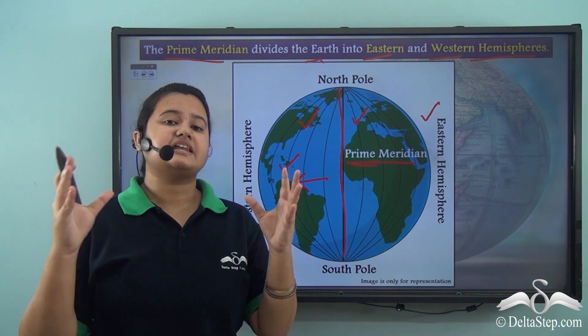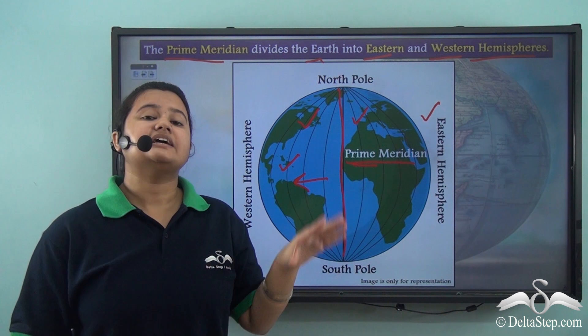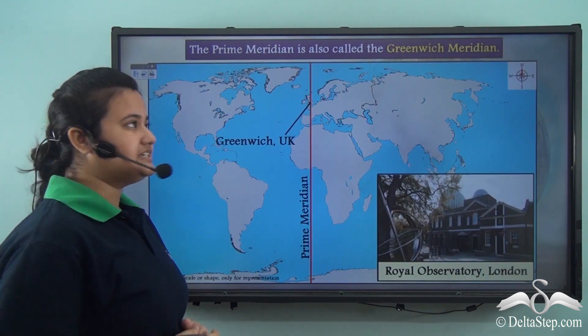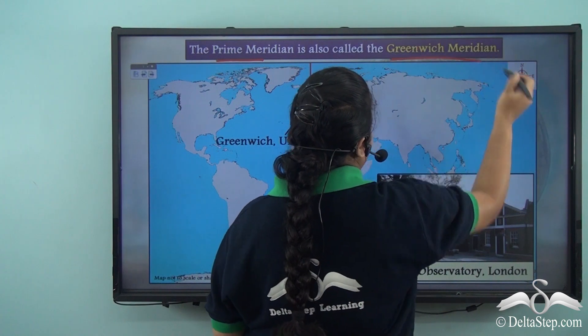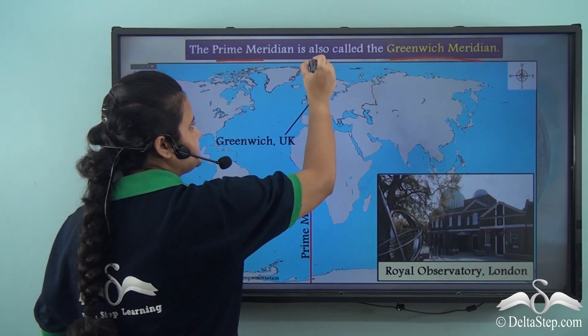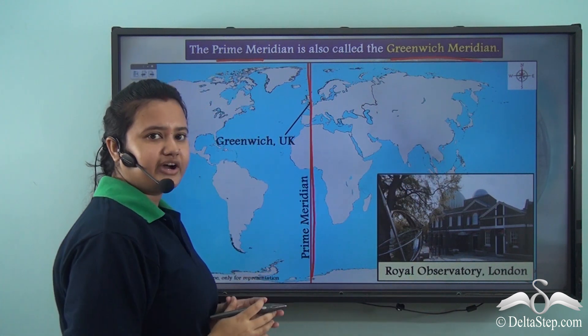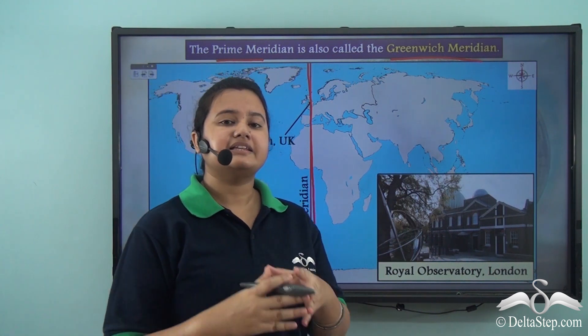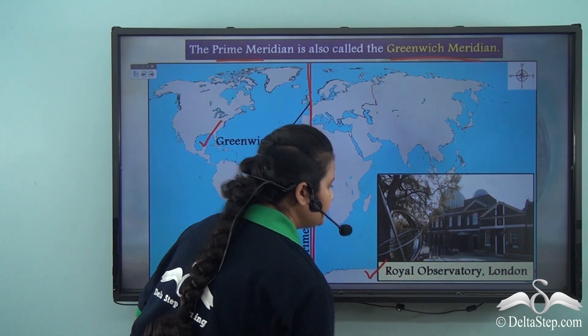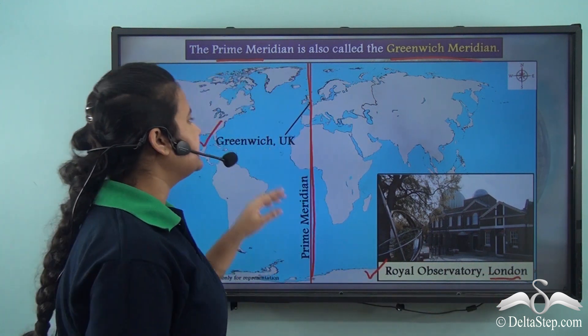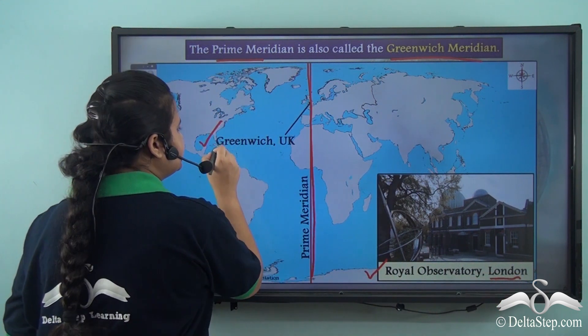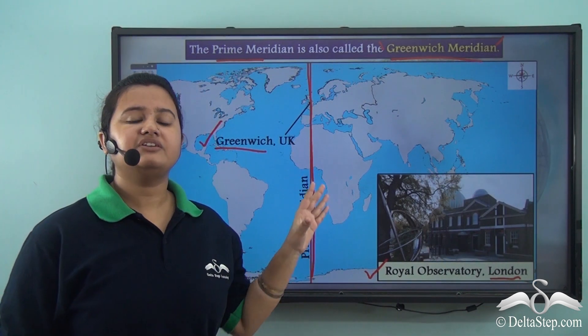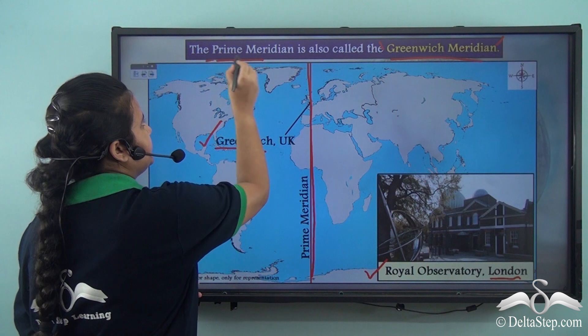This prime meridian is an important line of longitude and it is known by a special name. Prime meridian is also known as Greenwich meridian. This is because if we draw this imaginary line on a world map, we will find that this line passes through Greenwich UK or specifically this line passes through Royal Observatory which is situated in London. And since this meridian passes through Greenwich, it is also known as Greenwich Meridian.